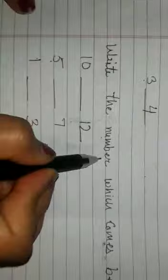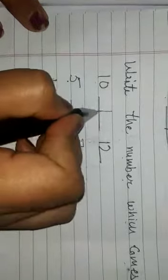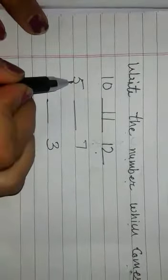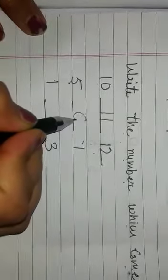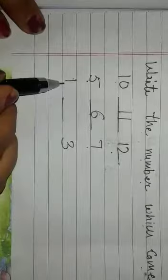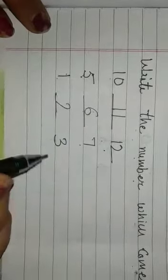Now, write the number which comes between. 10, 11, 12. 5, 6, 7. 1, 2, 3.